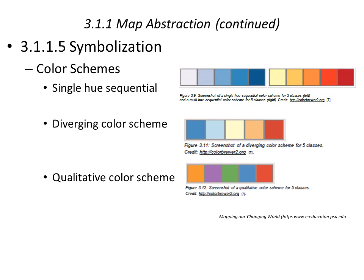You'd want to use a single-hue sequential color scheme when mapping a single pattern or topic, for example population density. You might use a diverging color scheme when mapping change over time, and a qualitative color scheme when simply mapping categories that do not imply any kind of numerical association.